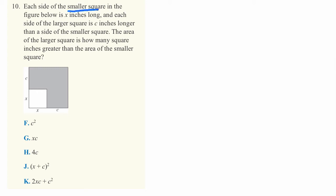Each side of the smaller square in the figure below is X inches long, and each side of the larger square is C inches longer than the side of the smaller square. The area of the larger square is how many square inches greater than the area of the smaller square?